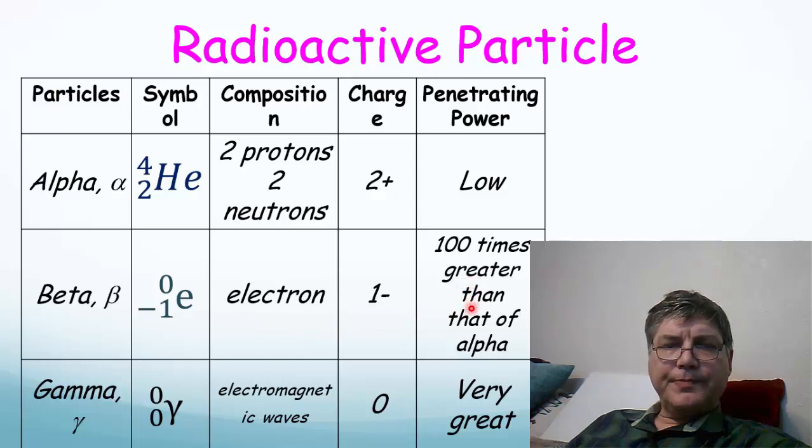The last is the gamma ray which is not a particle itself, has zero, zero, and the letter gamma, the zero representing that it has no effect on mass number or atomic number. It is an electromagnetic wave so therefore it has no charge and its penetrating power is very great.